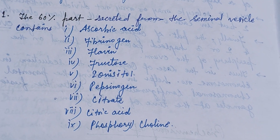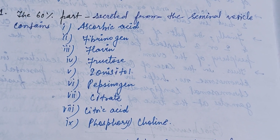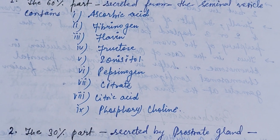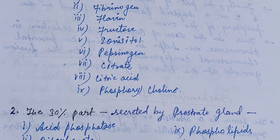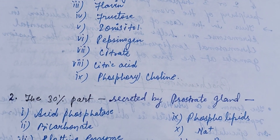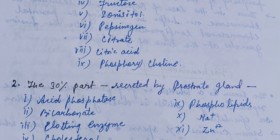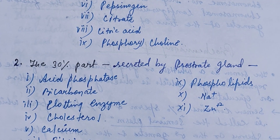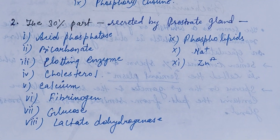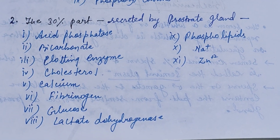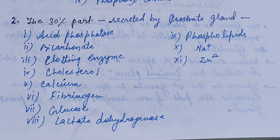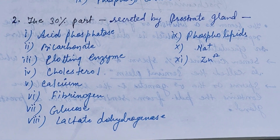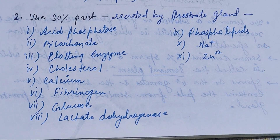The 60% part from the seminal vesicle contains ascorbic acid, fibrinogen, flavin, fructose, inositol, pepsinogen, citrate, citric acid, and phosphorylcholine. The remaining 30% part secreted from the prostate gland contains acid phosphatase, bicarbonate, clotting enzymes, cholesterol, calcium, peptidinogen, glucose, and lactate dehydrogenase.